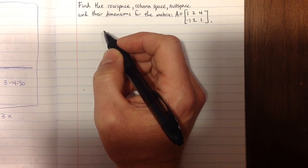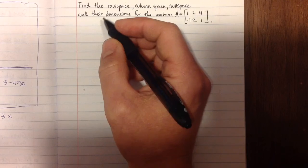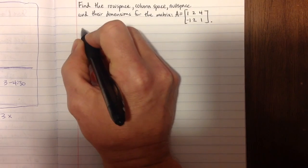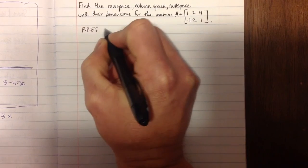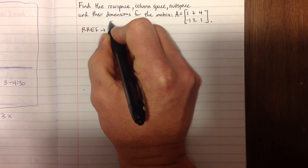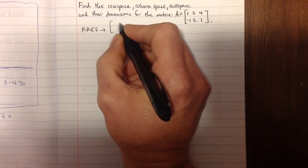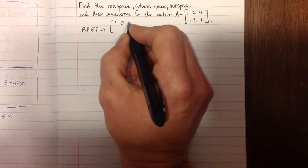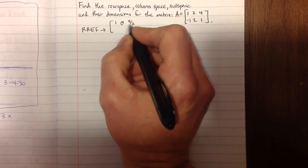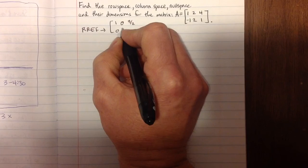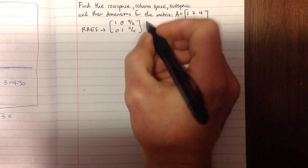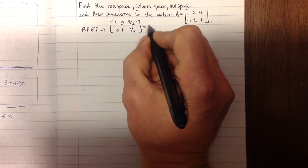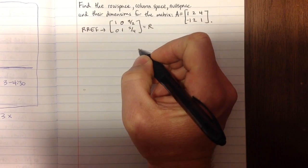We're going to start out using RREF. I type the matrix into my calculator. When I use RREF, I get this reduced matrix: 1, 0, 3 halves, 0, 1, 5 fourths. So I'll call this matrix R. This is my reduced row echelon form matrix with Gauss-Jordan elimination.